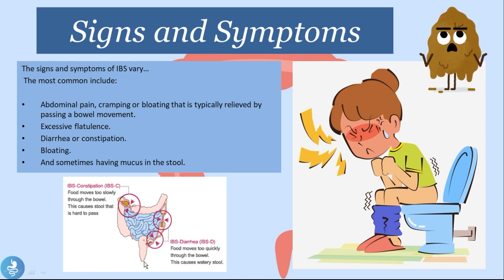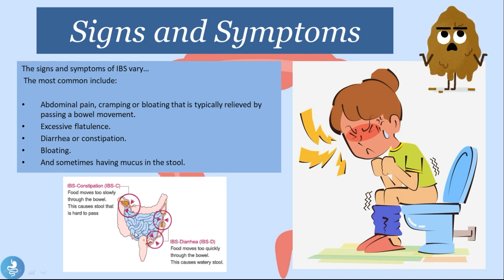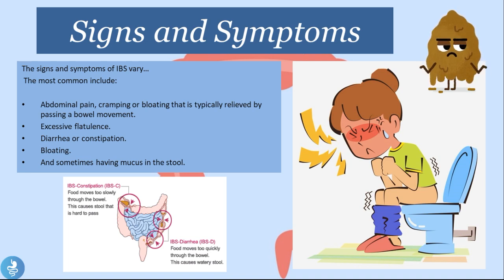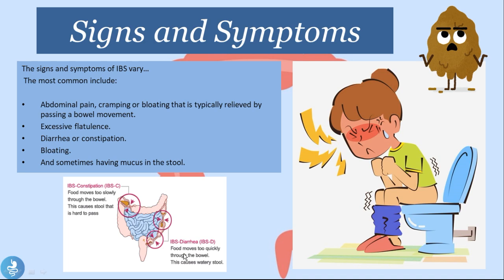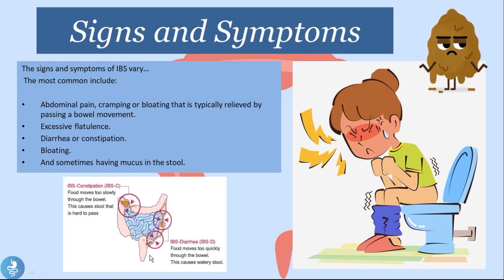In constipation-predominant IBS, this process occurs too slowly — the contractions propelling digested matter through the colon are too slow, so constipation is the primary symptom. In diarrhea-predominant IBS, the opposite occurs: food moves too quickly through the bowel, producing a watery, softer stool. The very fast, forceful contractions push digested matter through rapidly, resulting in soft and watery output.